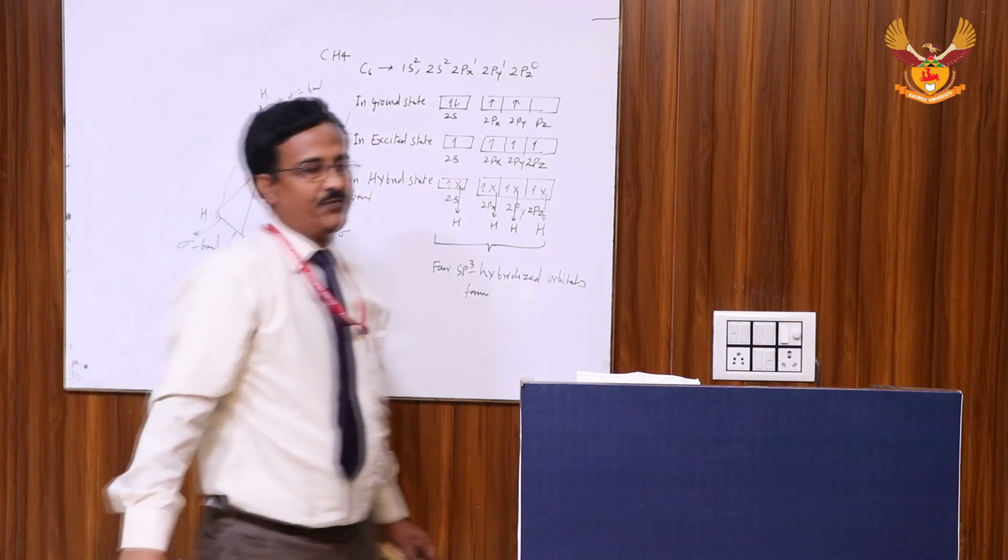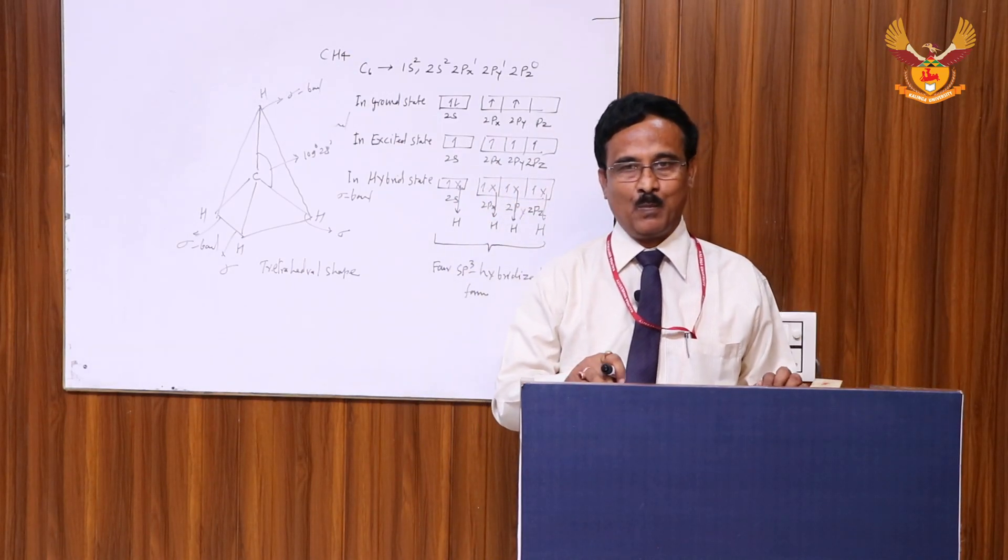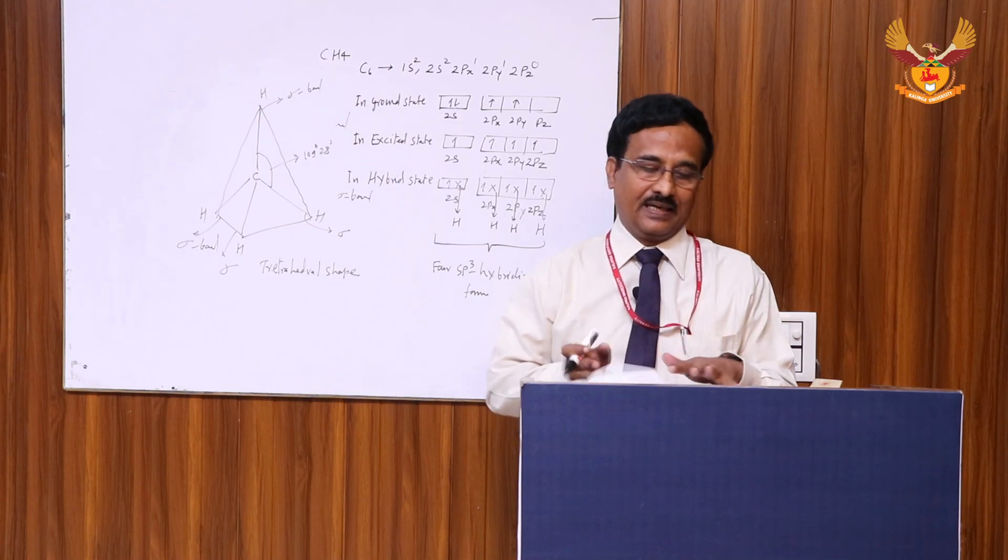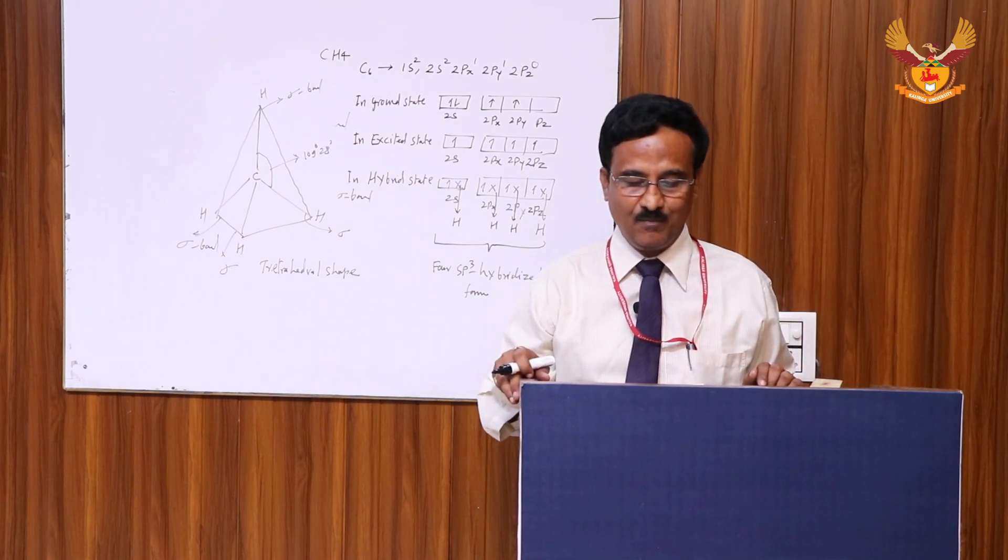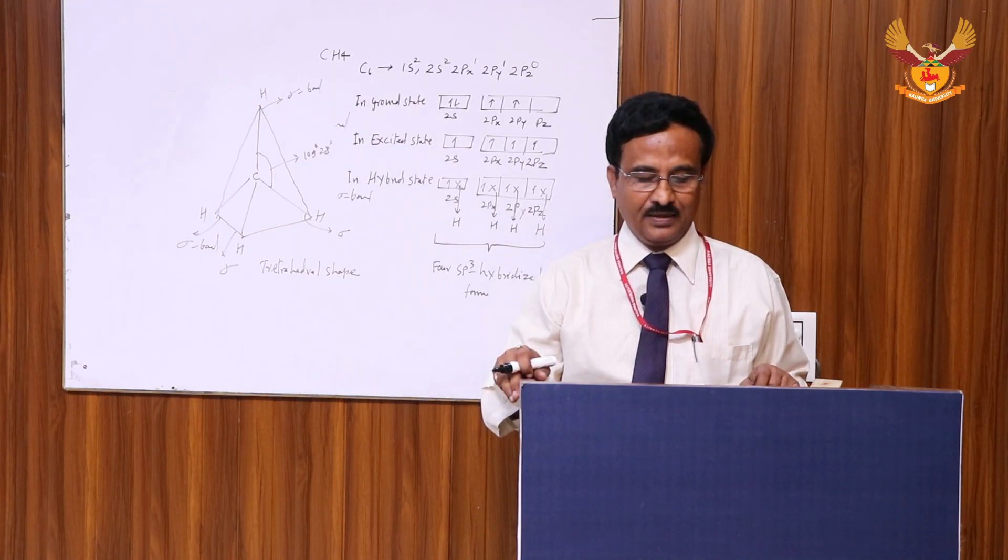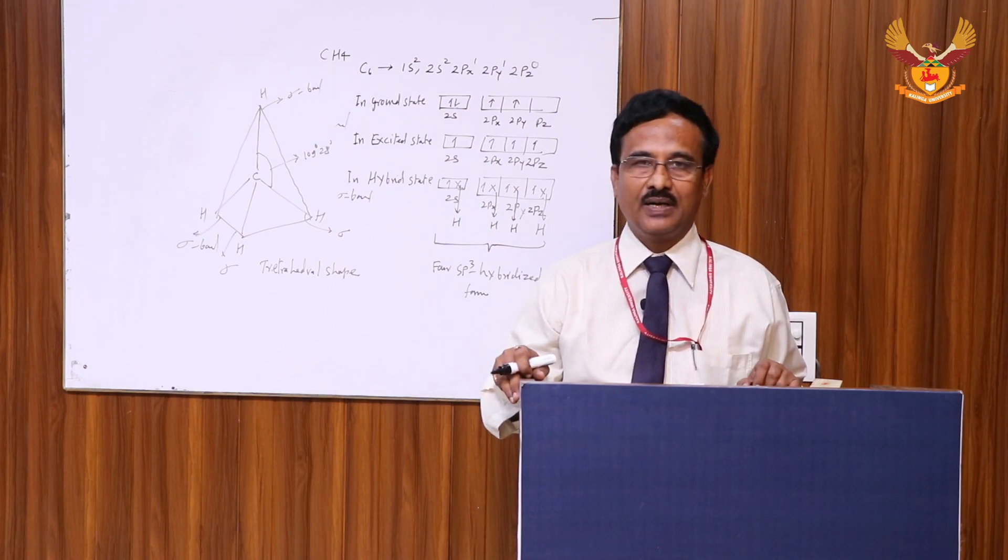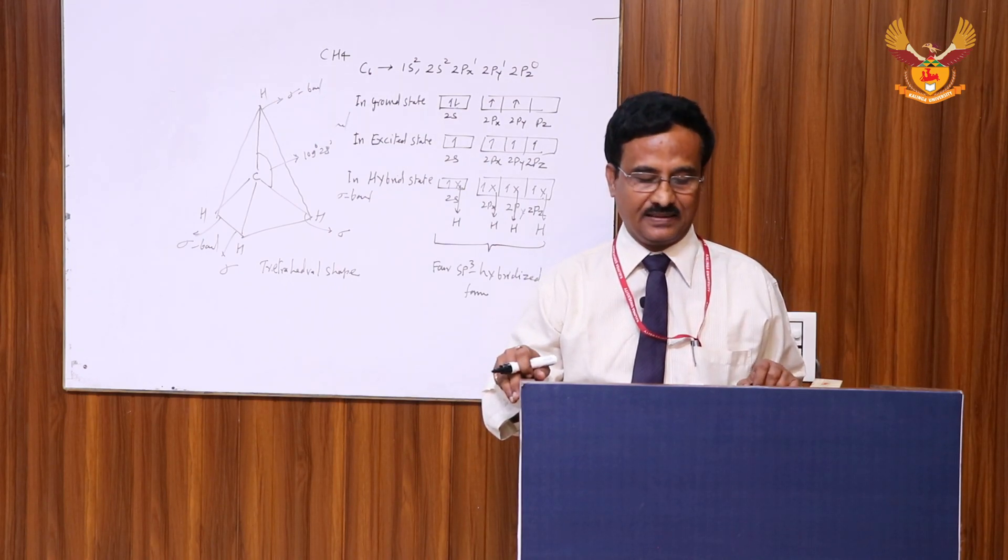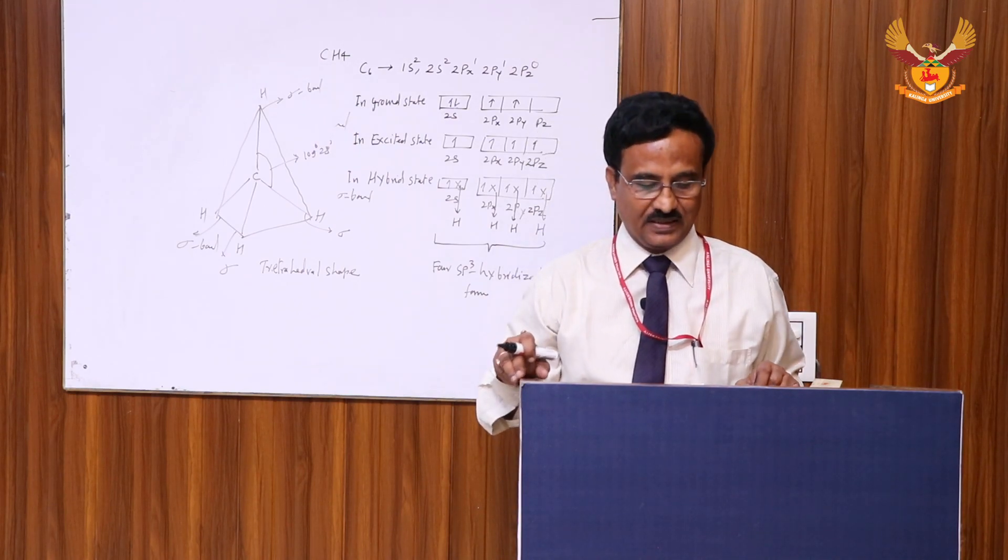Now we are discussing sp2 hybridization. Similarly, in sp2 hybridization, when one s orbital combined with two p orbitals to form a new orbital by redistribution of energy, it is called sp2 hybridization. For example, ethene molecule is taken below.